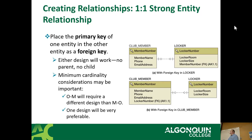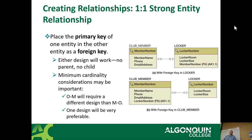Because it's a one-to-one relationship, you can never have more than one locker per member and never more than one member per locker — so you just pick which table you want to have the foreign key in and roll with it. It honestly makes no difference either direction. On the other hand, when creating a one-to-many strong relationship, the primary key is on the one side and the foreign key is on the many side — the one with the primary key is the parent, the one with the foreign key is the child.